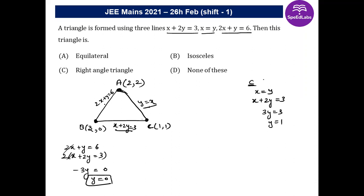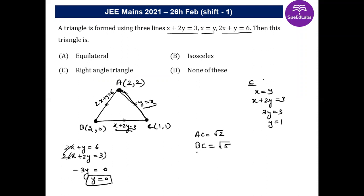Now applying the distance formula to find the side lengths. AC = √((2−1)² + (2−1)²) = √2. BC = √((3−1)² + (0−1)²) = √(4+1) = √5. AB = √((2−3)² + (2−0)²) = √(1+4) = √5. Two sides, BC and AB, are equal.